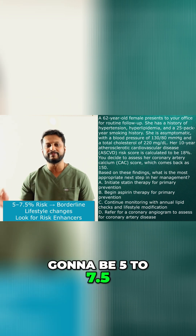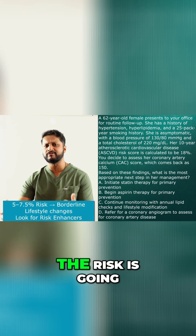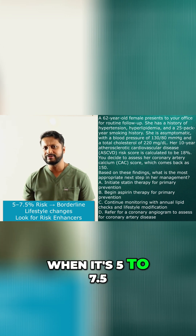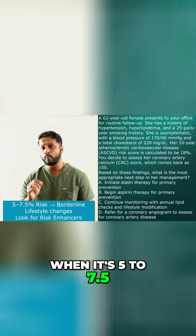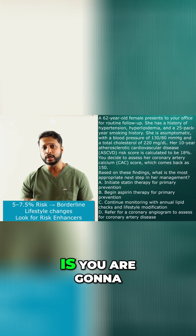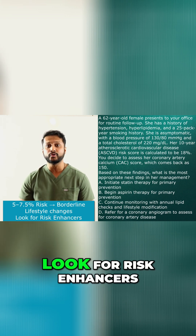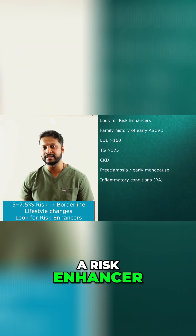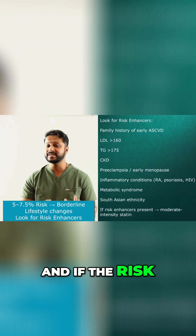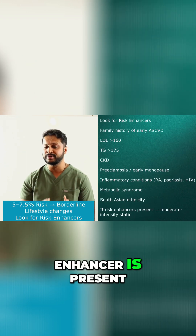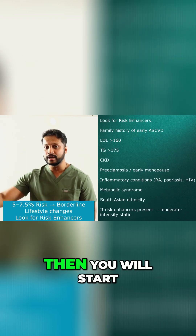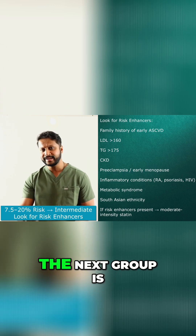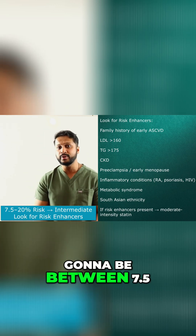The next group is going to be 5 to 7.5. You can see the risk is going higher in this range. When it's 5 to 7.5, what you're going to do is look for risk enhancers. If a risk enhancer is present, then you will start the patient on a statin.